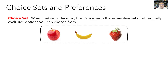We'll start by introducing some terminology. When people make decisions, we have to first define the options they're choosing over — that's what we call a person's choice set. The choice set is the exhaustive, meaning complete, set of all mutually exclusive, meaning you can only choose one, options that the person is choosing from. For example, there's a kid named Henry whose mom is asking him to choose between an apple, a banana, or a strawberry for a snack. His choice set is simply those three things.